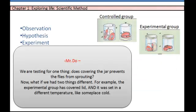We are testing for one thing. Thus covering the jar prevents the flies from sprouting. Now, what if we had two different things? For example, the experimental group had a covered lid and it was set in a different temperature like someplace cold.